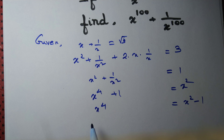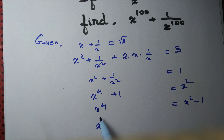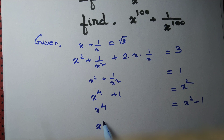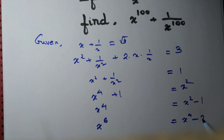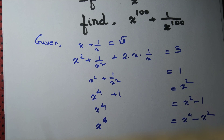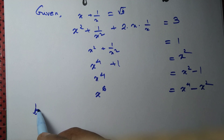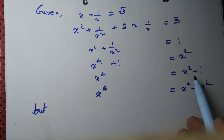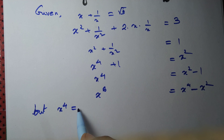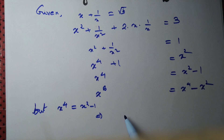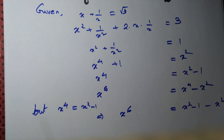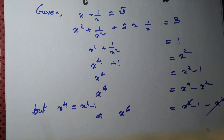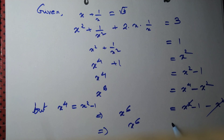Now let's multiply the whole equation by x squared again. x to the power 4 times x squared is x to the power 6, equal to x squared times x to the power 4 minus 1 times x squared, which is x squared. But by the previous step, x to the power 4 equals x squared minus 1, so x to the power 6 equals x squared minus 1 minus x squared. The x squared terms cancel, leaving x to the power 6 equals minus 1.